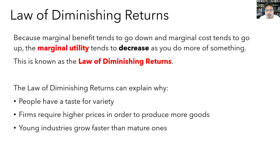The law of diminishing returns is an important concept because it can explain a lot of things we see. It explains why people have a taste for variety — as they consume more of one thing like hamburgers, they enjoy it less, and other things like pizza start to look more attractive. It also explains why firms require higher prices to produce more goods, since their marginal costs are rising. And it can explain why young industries tend to grow faster than mature ones: young firms seize the lowest-hanging fruit early, but as the industry matures, good opportunities become progressively harder to find.